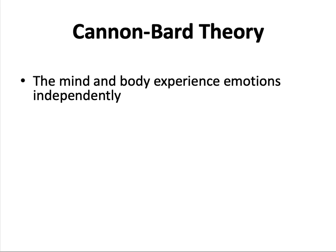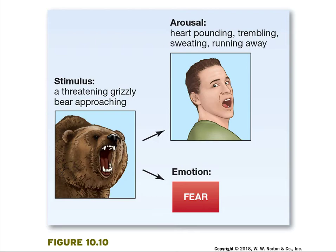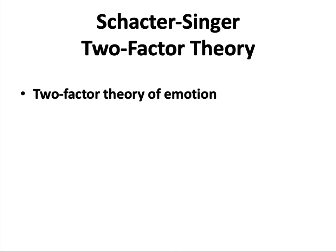Cannon and Bard proposed that the mind and body experience emotions independently. The mind is quick to experience emotions, and the body is much slower, taking at least a second or two to respond. In this theory, information about emotional stimuli is sent simultaneously to the cortex and the body, resulting in emotional experience and bodily reactions respectively. As a result, we experience two separate things at roughly the same time — an emotion and a physical reaction. For example, when a grizzly bear threatens you, you simultaneously feel afraid, begin to sweat, experience a pounding heart, and run.